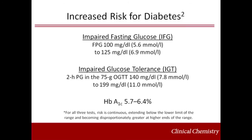It is recognized that there is an intermediate group of individuals whose glucose levels do not meet the criteria for diabetes, yet are higher than those considered normal. These people are defined as having impaired fasting glucose, which is demonstrated as glucose concentrations of 140 to 199 milligrams per deciliter two hours post-glucose challenge. It should be noted that impaired fasting glucose and impaired glucose tolerance have been termed prediabetes. Prediabetes is not a diagnosis, but a descriptive term to indicate that an individual is at increased risk for type 2 diabetes.